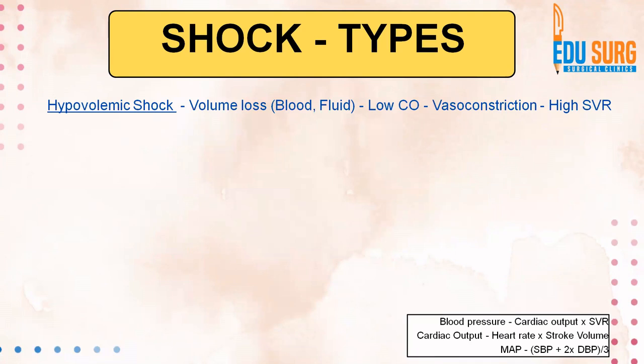Coming to types of shock, let us start with hypovolemic shock, which can be due to fluid loss — say vomiting, diarrhea, or blood loss — with the most common cause being trauma. What will happen? The cardiac output goes down. Remember that this is just volume loss: your heart is good, your pump is good, your vasculature is good. So the systemic vascular resistance is good. The problem is there is not enough volume to pump. This is a problem which is before the system.